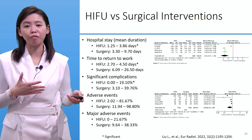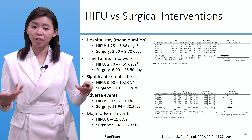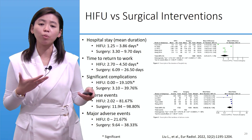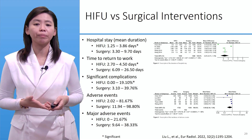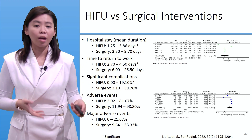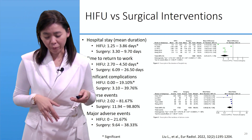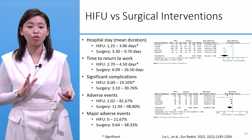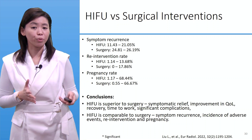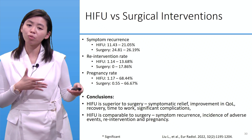Hospital stay mean duration for HIFU is one to four days versus three to ten days for surgery. Time to return to work: HIFU patients took about three to five days versus six to twenty-six days for surgery patients. Significant complications: HIFU 0–19% versus surgery 3–40%. Adverse events: HIFU 2–82% versus surgery 12–99%. Major adverse events: HIFU 0–22% versus surgery 10–38%. Symptom recurrence: HIFU 11–21% versus surgery 25–26%. Re-intervention rate: HIFU 1–14% versus surgery 0–18%.